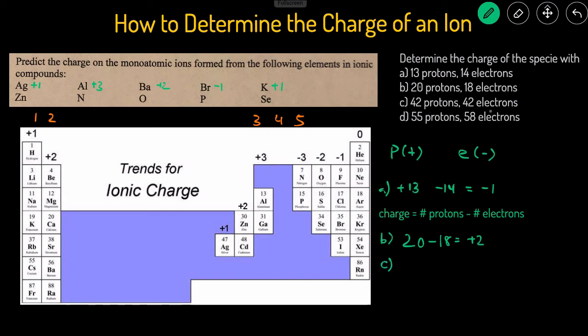C, 42 protons, 42 electrons. Well, you have the same number of protons and electrons. Then that just means that this is a neutral atom. It doesn't have a charge. Because if you were to plug it into the equation, it'll be 42 minus 42, which equals 0.